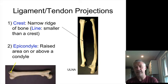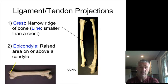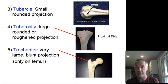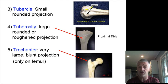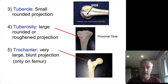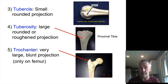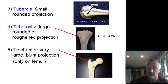A crest is a raised line on a bone, and a line is even smaller than a crest. A raised bump above a condyle is called an epicondyle. Then you have the different T's. Tubercles are small round projections. A slightly larger round projection is a tuberosity. The largest ones, found only on the femur, are trochanters — large blunt projections. We have a greater and lesser trochanter, and we only see those on the femur.